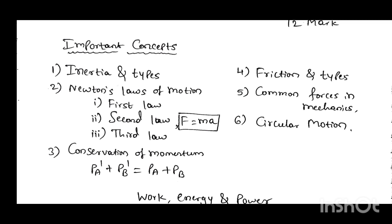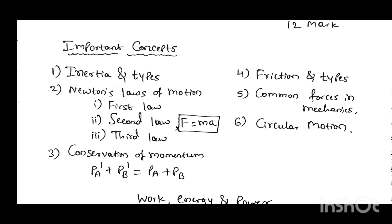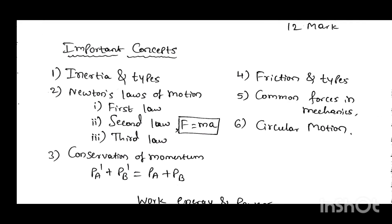The next main concept is friction and its types. Friction is the opposition force offered to a body in motion. There are three types: static friction, rolling friction, and kinetic friction. You will get questions on these types in your exam. After that, common forces in mechanics and circular motion — when a body moves in a circular path, you can measure parameters related to circular motion. These are the main concepts in Laws of Motion.